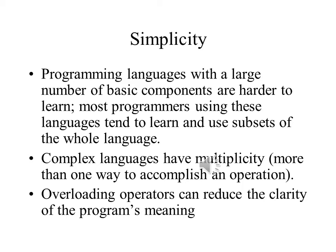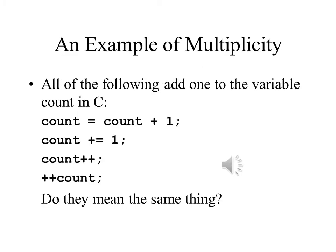This is also true of operator overloading. As operators do more different things, it becomes harder to figure out exactly what they are doing. A great example of multiplicity is adding one to a variable in a C language program. There are two different assignment statements that you can write, as well as two different ways of using the auto-increment operator, and while they look like they mean the same thing, that is not exactly the case, especially if these statements are modified to include another term.